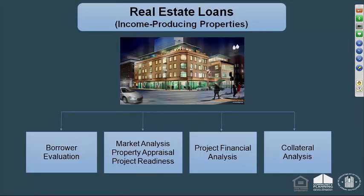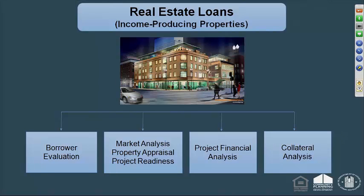Then you'll do a project financial analysis, developing pro forma financial statements looking at various sources including the appraisal and other information to determine whether the project will generate sufficient cash flow to pay back the loan. Finally, you're going to do the collateral analysis, making sure you have the type of collateral needed — usually for these kinds of projects, that's a lien on property. But you can also supplement with other types of collateral such as personal or corporate guarantees.